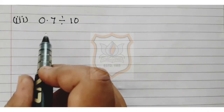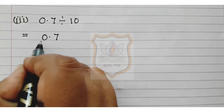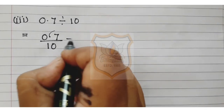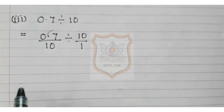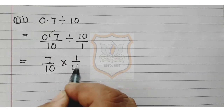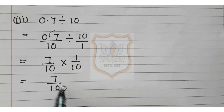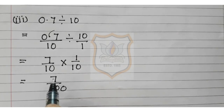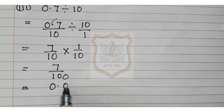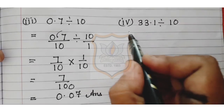Now part 3: 0.7 divided by 10. That equals 0.7 upon 10, removing the decimal gives 7 upon 10, divided by 10 upon 1. That equals 7 upon 10, multiplied by 1 upon 10, giving 7 upon 100. Moving 2 digits to the left, the answer is 0.07.